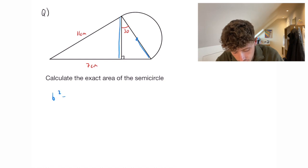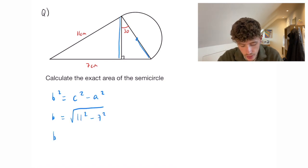So to get b squared it's going to be c squared minus a squared, so b is going to equal the square root of 11 squared minus 7 squared, so b is equal to 6 root 2 which is that length there.